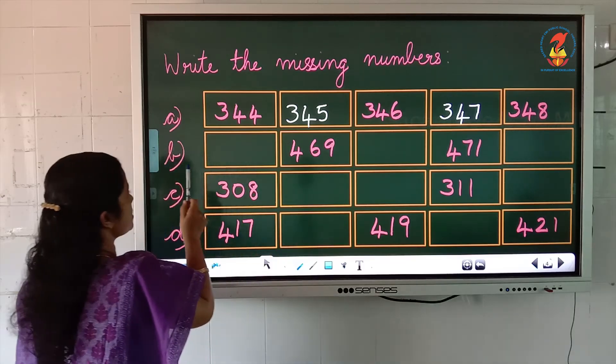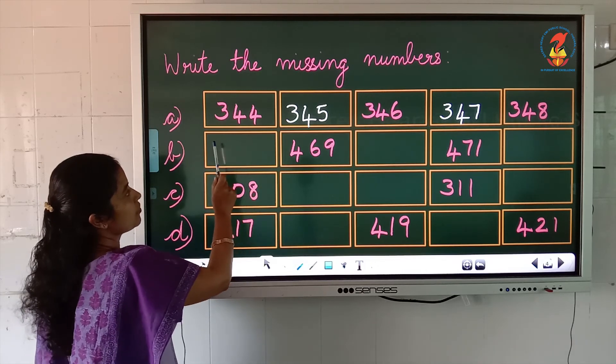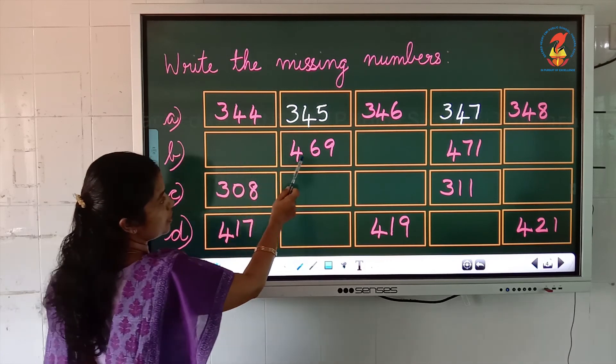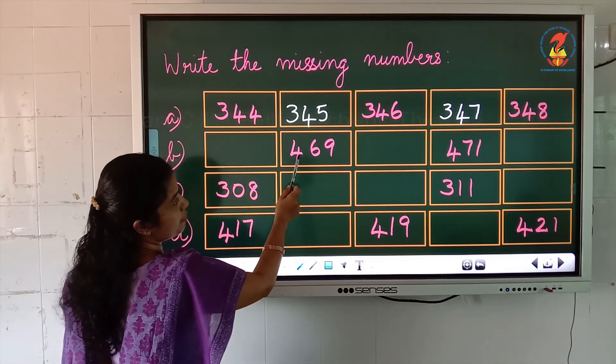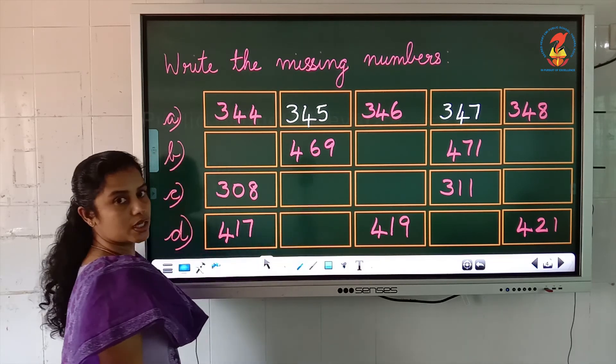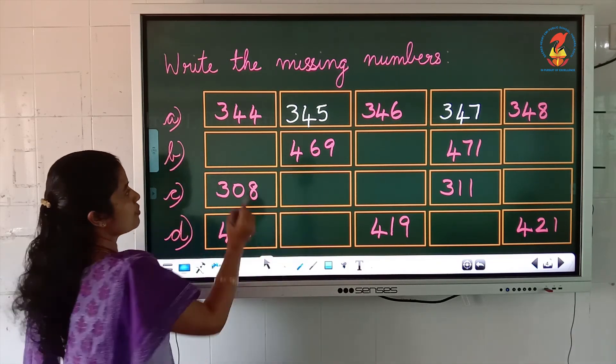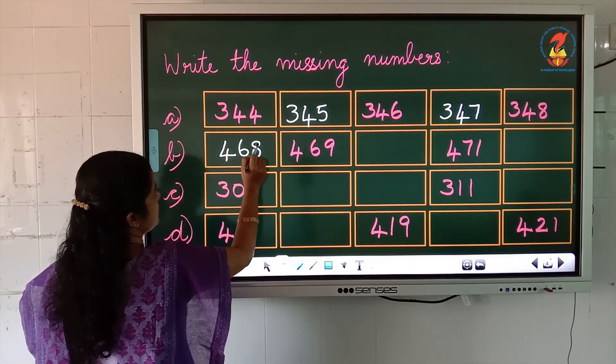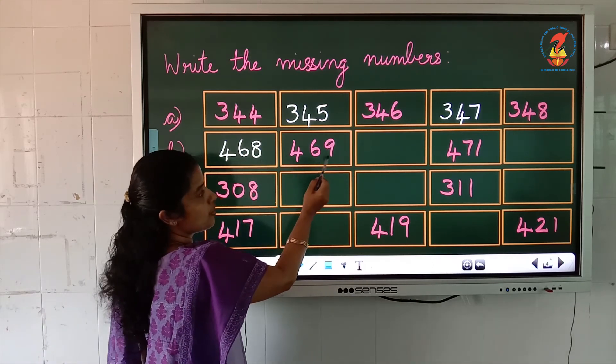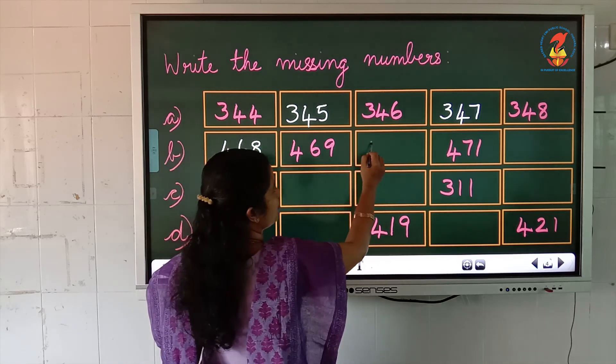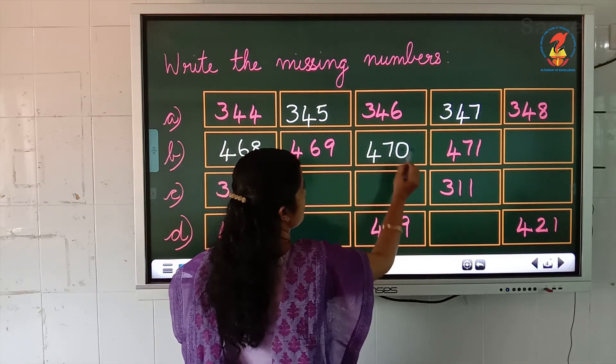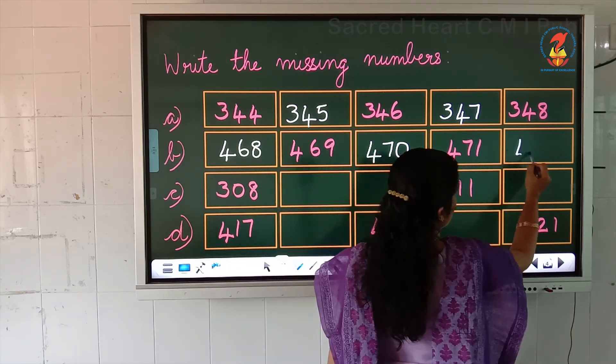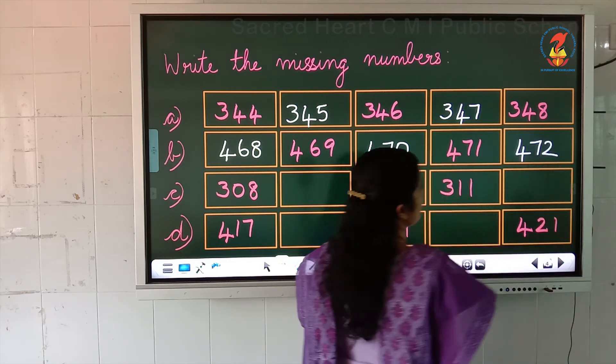The second question. The first box is vacant, nothing is there. We have to write in the first box. Look into the second box. What is the number? 469. What comes before 469? 468. This is 469. What comes after 469? 470. What comes next? 471. What comes after 471? 472.